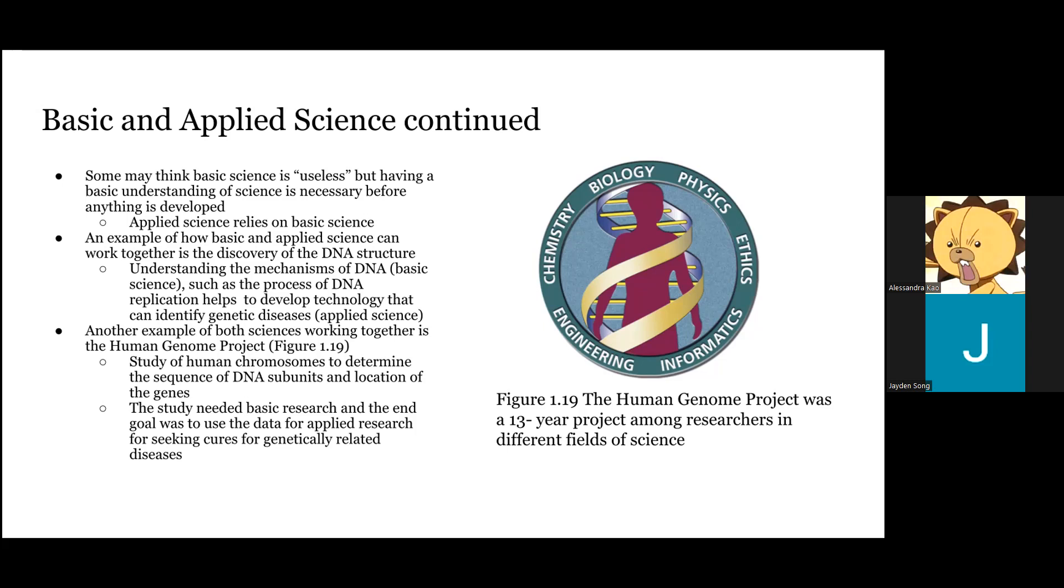Another example of both sciences working together is the Human Genome Project, the study of human chromosomes to determine the sequence of DNA subunits and location of those genes. The study needed basic research, and the end goal was to use the data for applied research for seeking cures for genetically related diseases. Figure 1.19 shows the Human Genome Project was a 13-year project among researchers in different fields of science.